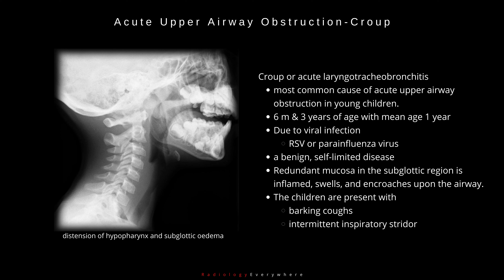The peak incidence is seen between 6 months and 3 years of age, with mean age being 1 year of age. This is due to viral infection — respiratory syncytial or parainfluenza virus — and is usually a benign, self-limited disease.